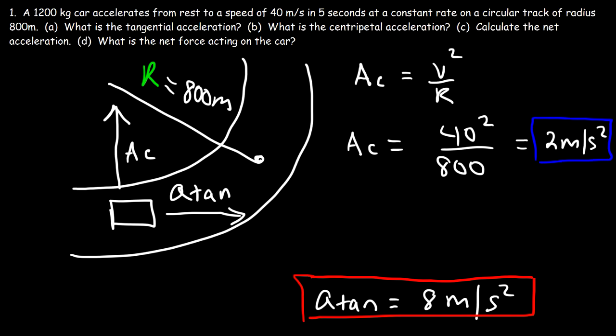With this information we can calculate the net acceleration when the speed is 40, because as the speed changes the centripetal acceleration changes as well. When the car starts from rest the centripetal acceleration is zero, and when it reaches 40 m/s the centripetal acceleration is 2 m/s². So as the car speeds up, the centripetal acceleration increases too.